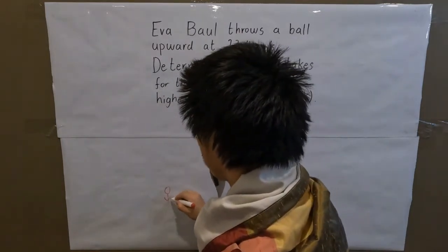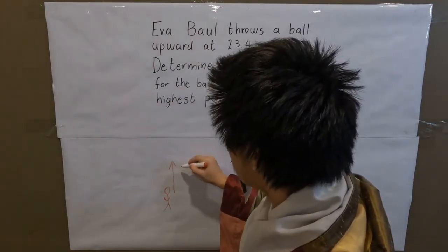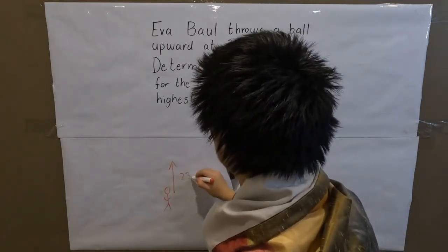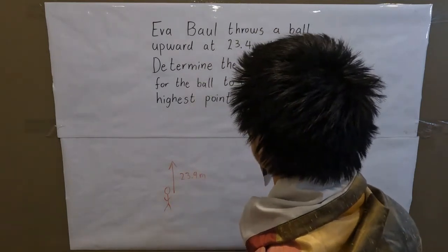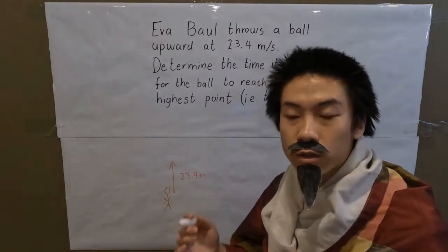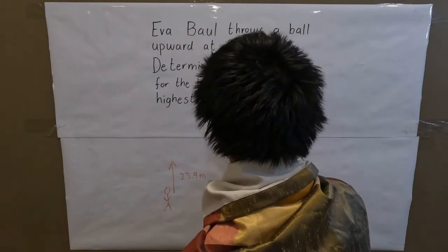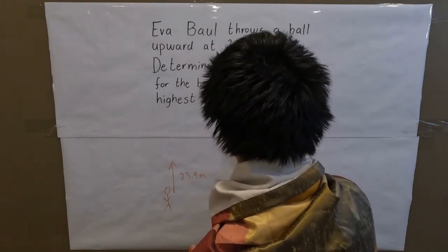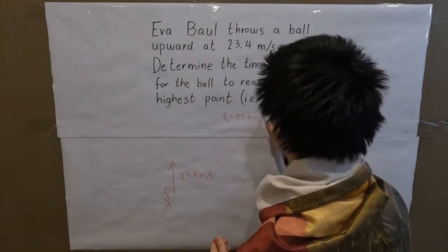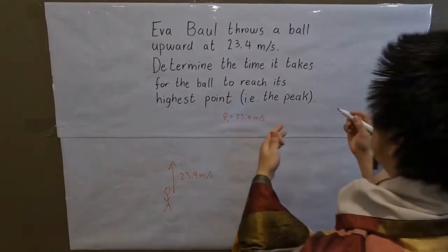Let's say Ever throws the ball straight up at a speed of 23.4 meters per second. That is the initial velocity, so vi = 23.4 meters per second. And they want us to find the time — Δt — which we don't know; we want to find it.